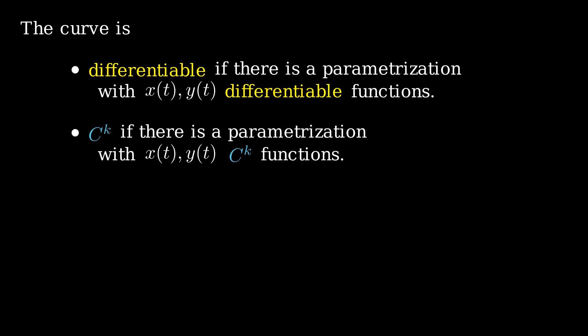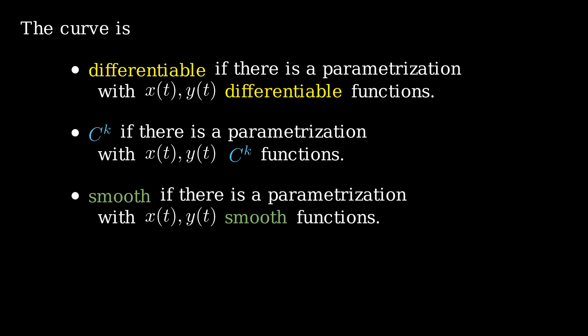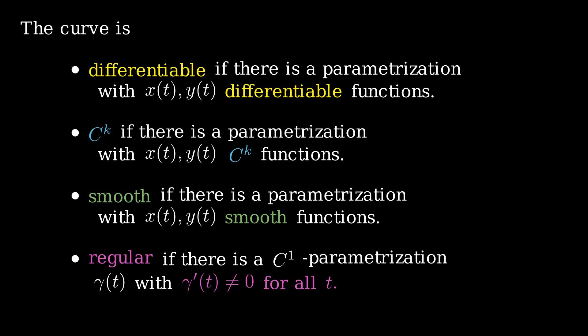Remember that C^k means that they have derivatives up to order k and those derivatives are continuous. We say the same for smooth, where smooth means that all their derivatives exist, and we say that the curve is regular if there is a C^1 parametrization whose derivative never vanishes.